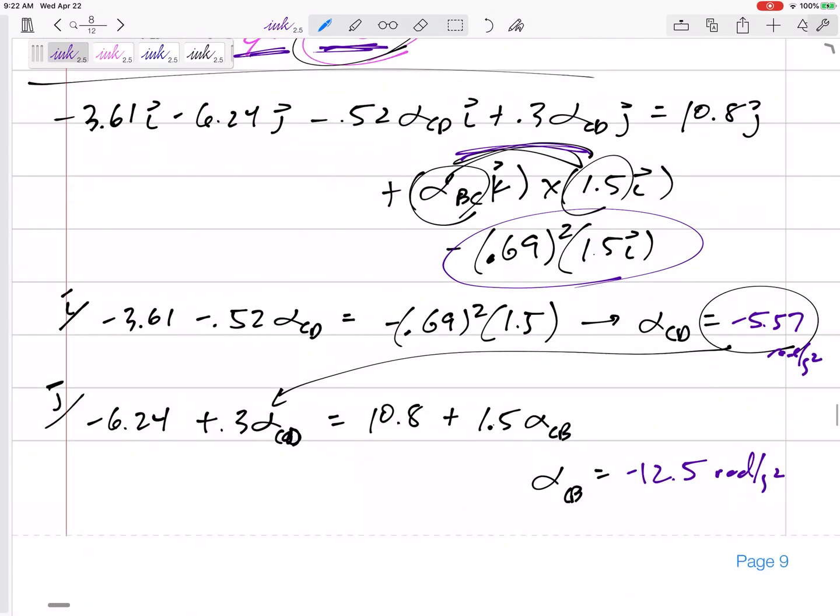Okay, so double checking on this math, but this last problem we just did, I got negative 5.57 radians per second squared for alpha of CD and negative 12.5 for alpha of CB.